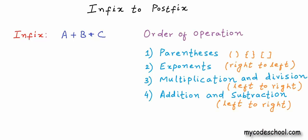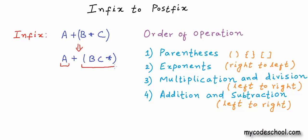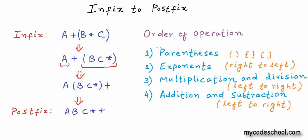Let's do the conversion for this expression. The precedence of the multiplication operator is higher, so we will first convert the part B asterisk C. B asterisk C will become BC asterisk — the operator comes in front of the operands. Now we can do the conversion for the addition; the operands are A and this postfix expression. In the final step we get rid of all the parenthesis, and this is my postfix expression.